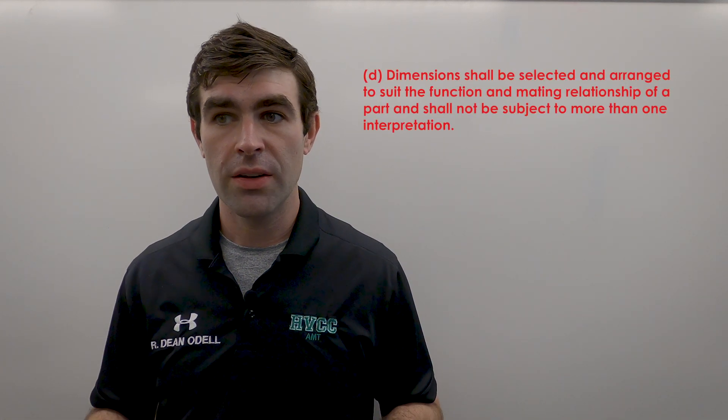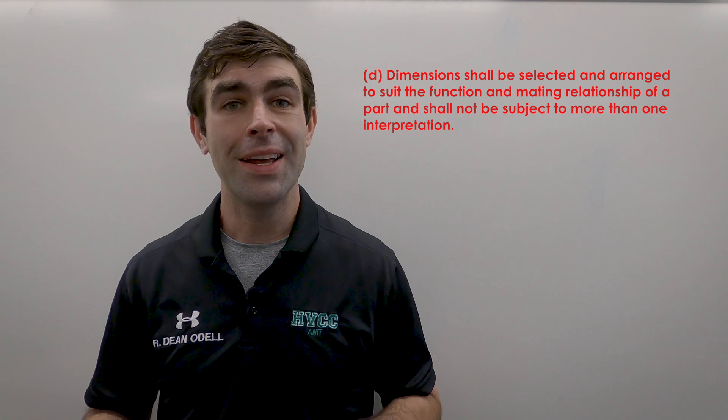Rule D: dimensions shall be selected and arranged to suit the function of the part and shall not be subject to more than one interpretation. This is very important when it comes to the relationship between designing and manufacturing. Manufacturing will say the part needs to be designed to be manufactured; design will say it needs to be designed based on function. The standard says it should be based on function, though sometimes you have to make allowances for manufacturing — changing datum schemes and tolerances for things to be made economically.